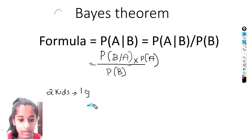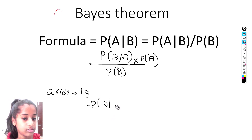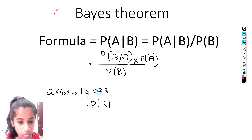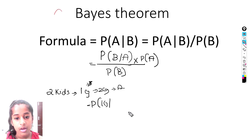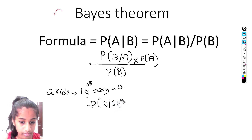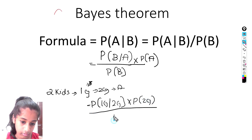Let me put this into the formula. Here B is one girl, and A is two girls. So we are checking: out of the event that one kid is a girl, what is the probability that both kids are two girls? We multiply it with probability of A, which is two girls, and divide by probability of B, which is one girl.